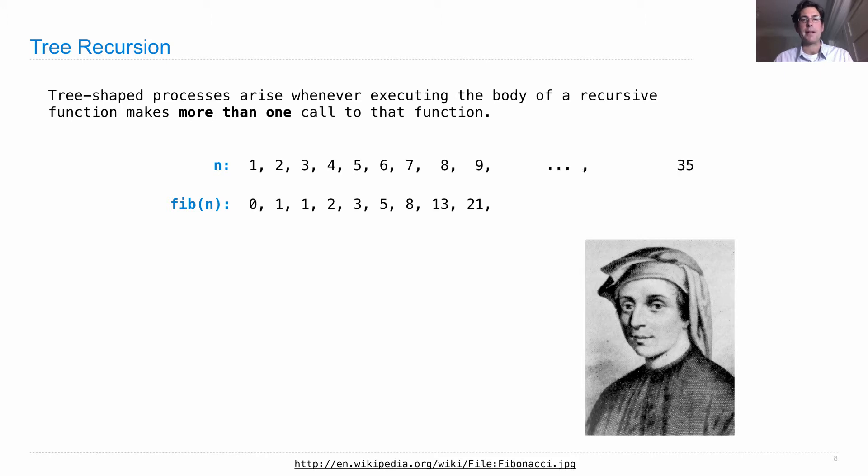Interesting thing about the Fibonacci sequence is it actually grows very large very quickly. If we go out to the thirty-fifth element, it's over five million.